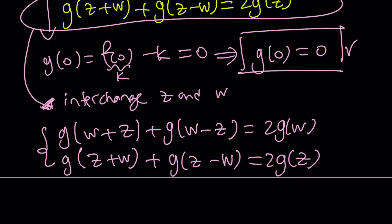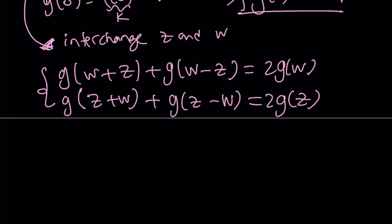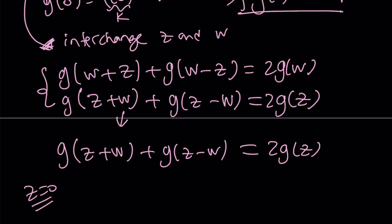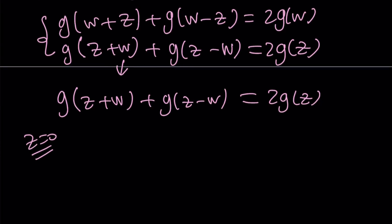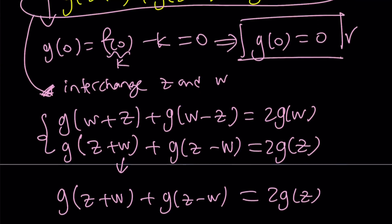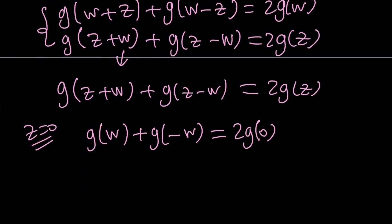Since we know that g(0) = 0, and we have this equation g(z+w) + g(z-w) = 2g(z) - by the way I'm using the second one, which was the original equation - I'm going to replace z with 0. Let's see what happens. If you replace z with 0, you get g(w) + g(-w) = 2g(0). But g(0) equals 0, remember that? So this is going to equal 0.